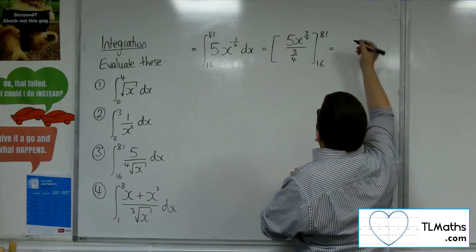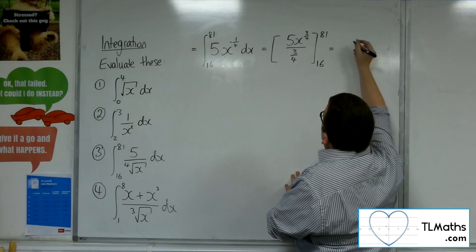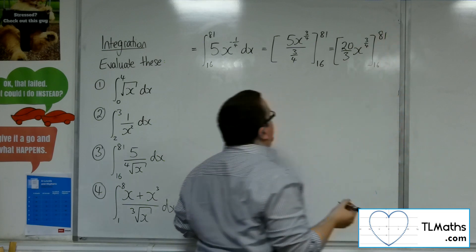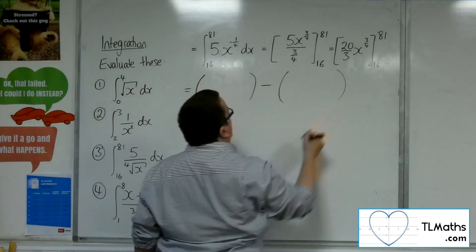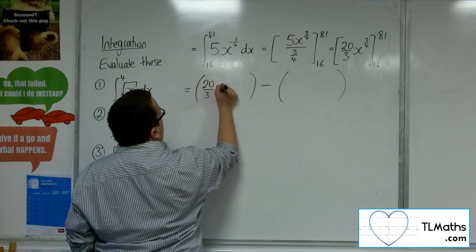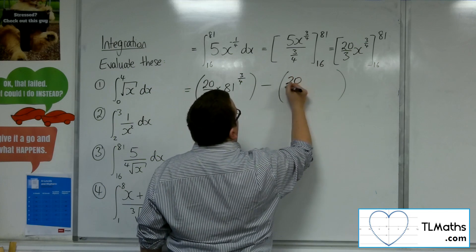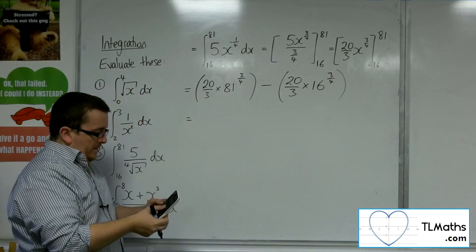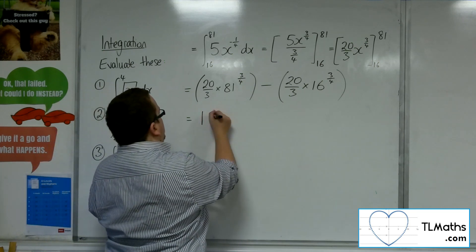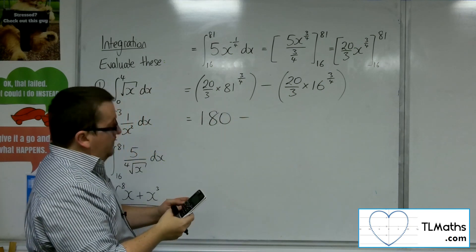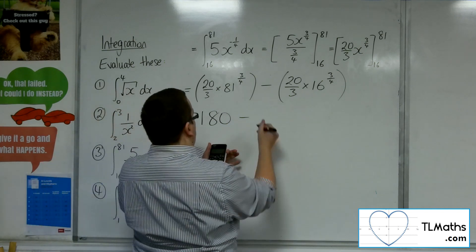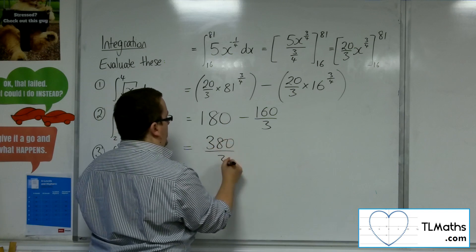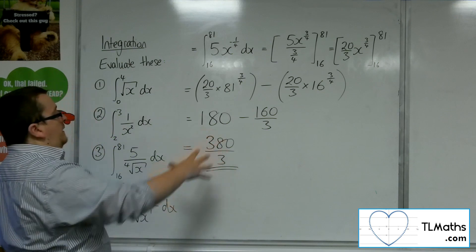I want to simplify that: five lots of four thirds, which is 20 thirds, x to the three quarters, evaluated between 16 and 81. Open up your brackets, substitute in 81 first: 20 thirds times 81 to the three quarters, and then 20 thirds times 16 to the three quarters. So the first bracket gives 180, and the second bracket gives 160 over 3. So 180 take away 160 over 3 is 380 over 3. That is the answer for number three.